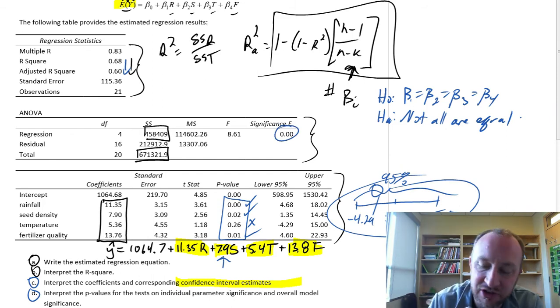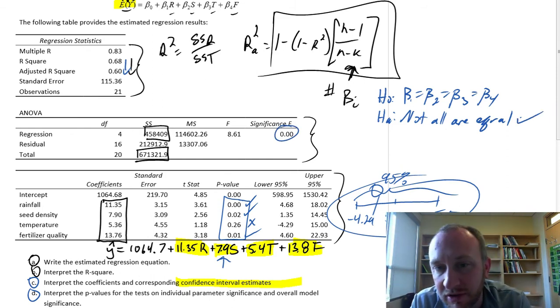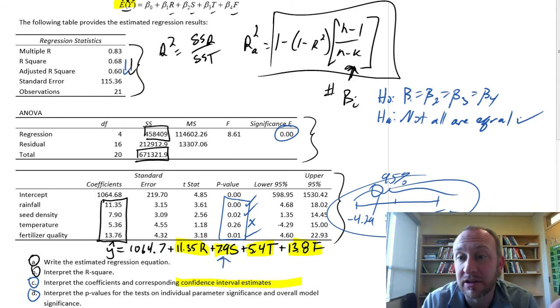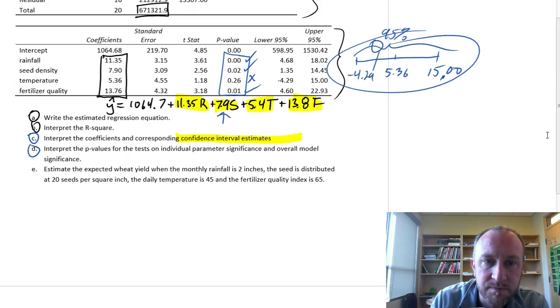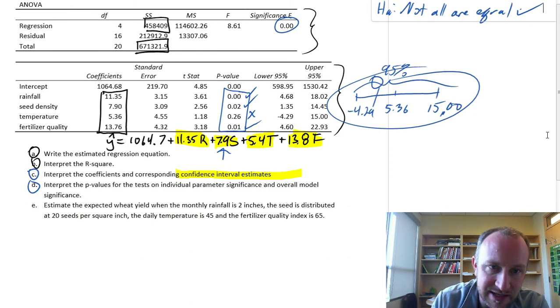And here's that p-value for that test. We quite strongly reject not all of those are equal. And that's generally confirmed by our individual t-tests as well. We've got three of the four are individually significant. That's it for A, B, C, and D.